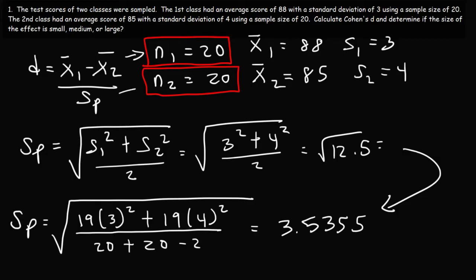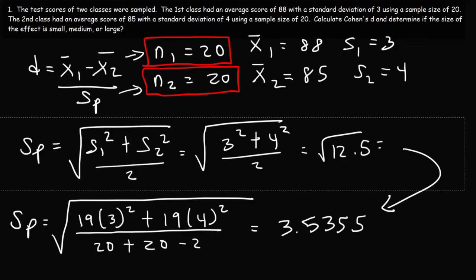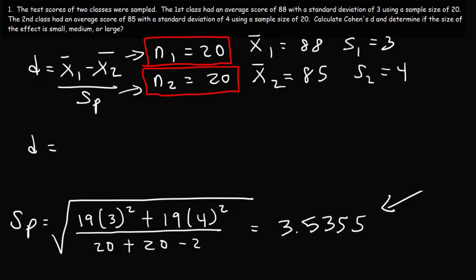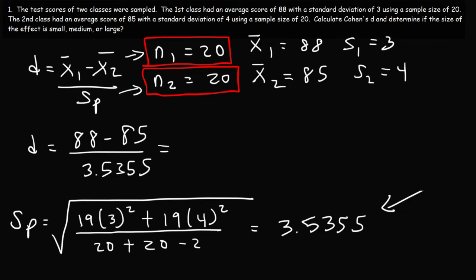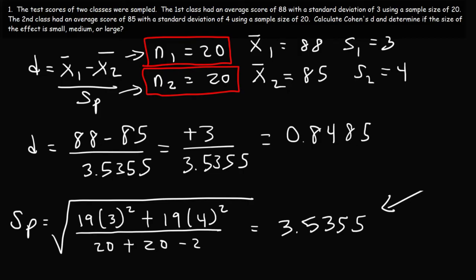So when the sample sizes are very close to each other or equal, you can use that simpler formula. Now we have everything we need to calculate Cohen's D. It's X-bar 1, which is 88, minus X-bar 2, which is 85, divided by the pooled standard deviation of 3.5355. 88 minus 85 is positive 3. So 3 divided by 3.5355 gives us 0.8485. A D value of 0.8485 means that the size of the effect is large.